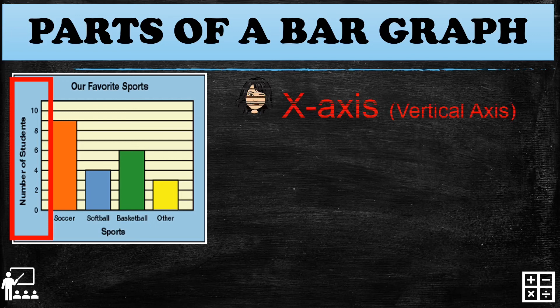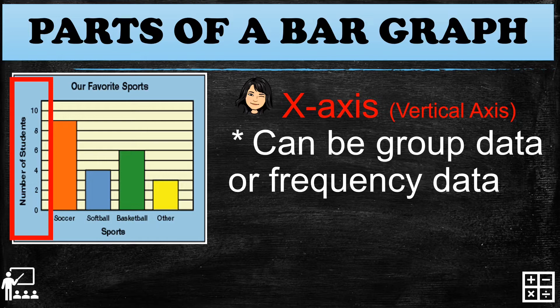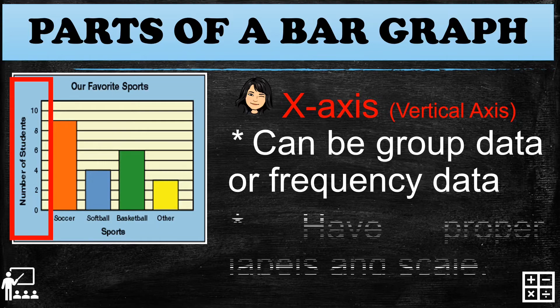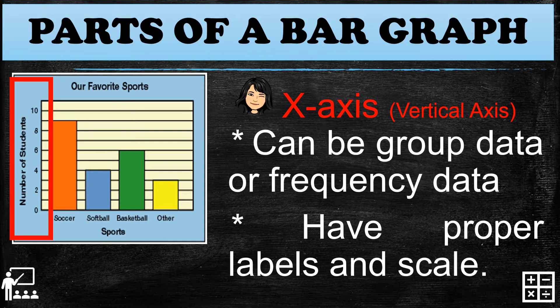Next is the x-axis, or the vertical axis. It is called the vertical axis because the data is drawn vertically. It can also show group data or frequency data, depending on your kind of bar graph. In this example, the x-axis shows frequency data because it has numbers. It should also have proper labels and a scale.